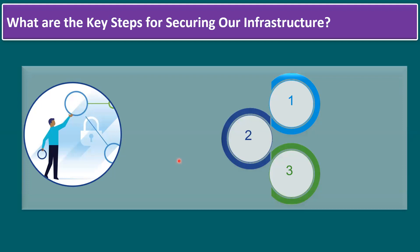The key steps currently include mainly three steps. The first step is to evaluate our current security state. The second is to define our future-state cybersecurity strategy. The third is to harden our environment. Here, environment or infrastructure covers all our data center key components, which includes servers, storage, network, virtualization layer, monitoring, logging, and data protection — meaning backup, disaster recovery, restoration, and archival.